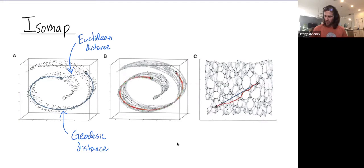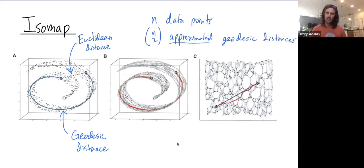So if you have n data points, you get n choose 2 approximated geodesic distances. You can think of this as an n choose 2 distance matrix. Sorry, you should think of this as an n by n distance matrix. You have n data points, those same n data points, and each entry of this matrix tells you the distance between two points.